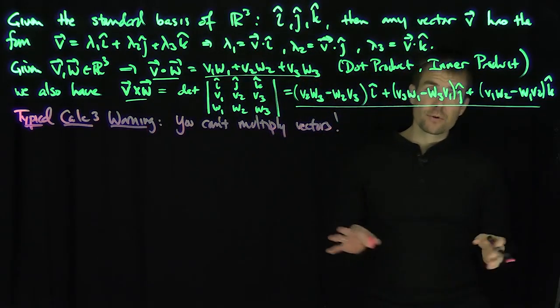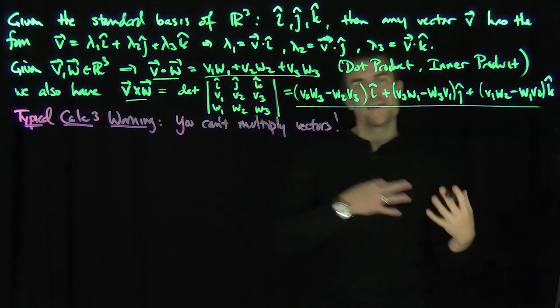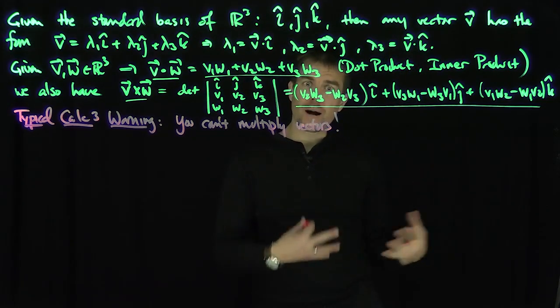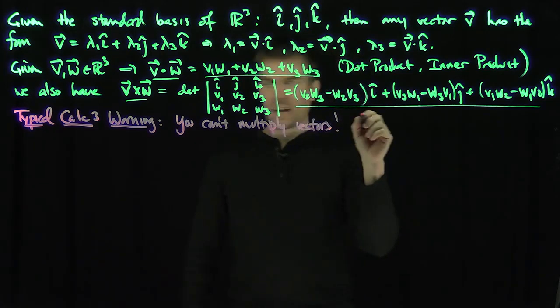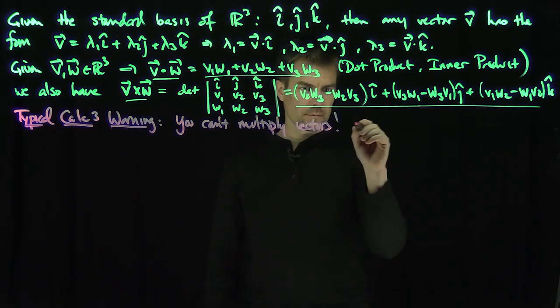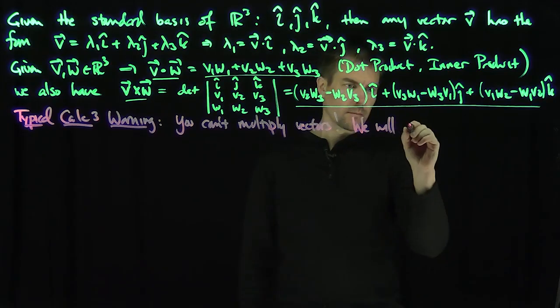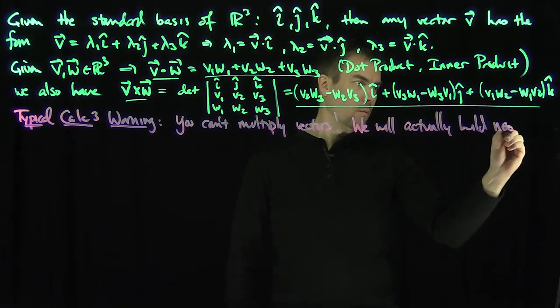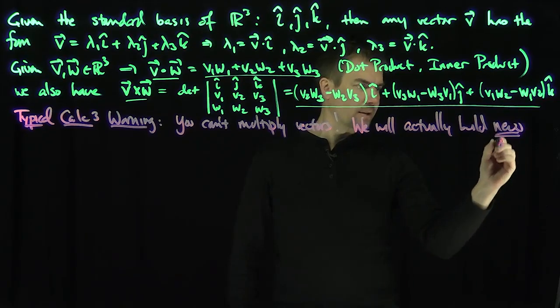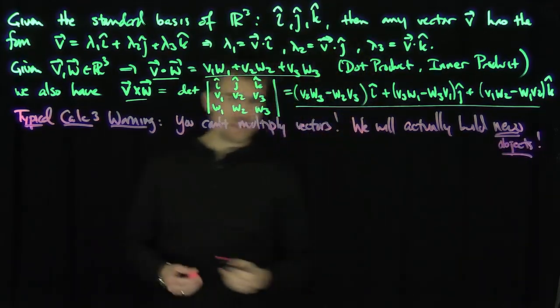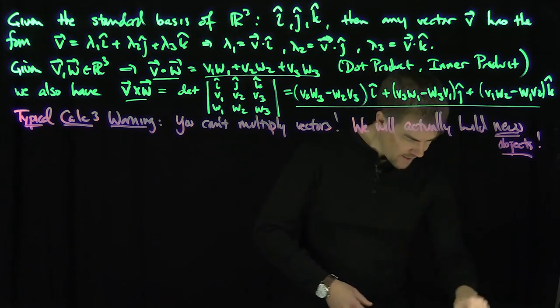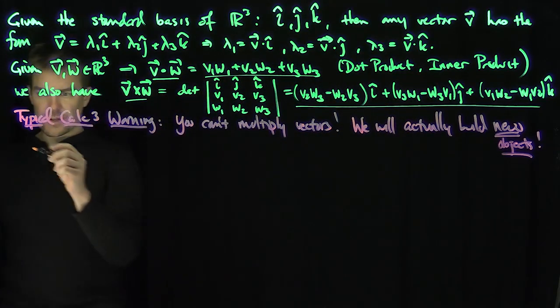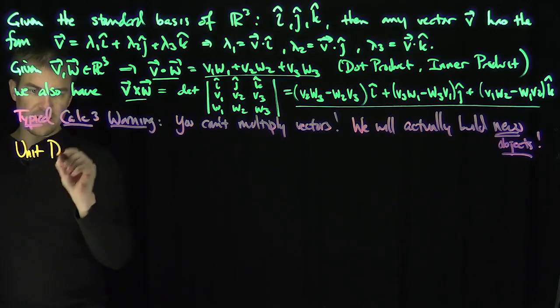And strictly speaking, that's not true. We can actually construct different objects. Now that we're comfortable with some ideas from tensor analysis, we can construct new objects called dyadic tensors. So we will construct new objects, and these new objects are called dyadic tensors. We're going to consider these so-called unit dyads.